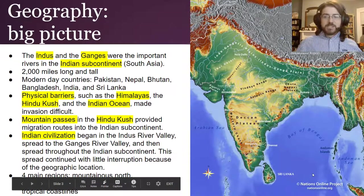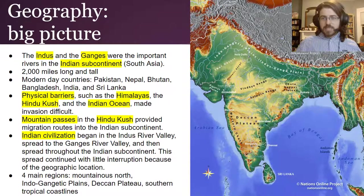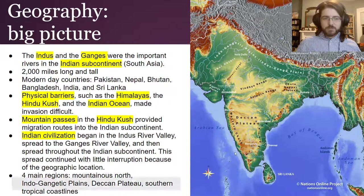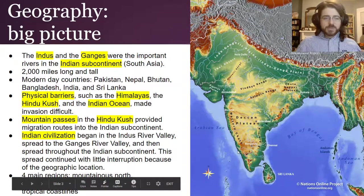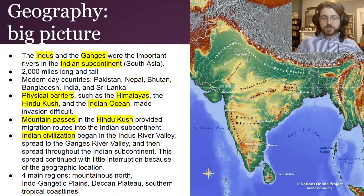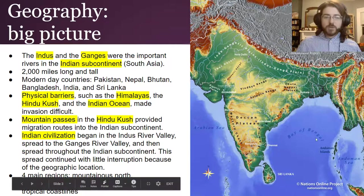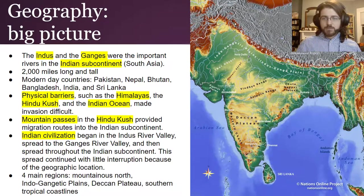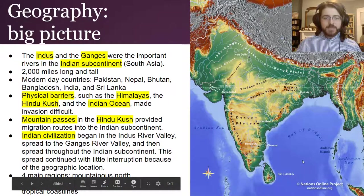Here's the biggest of big pictures: this is the Indian subcontinent. You have the Indus River here and the Ganges River here. Overall it's about 2,000 miles wide and 2,000 miles tall. It encompasses the modern-day countries of Pakistan, Nepal, Bhutan, Bangladesh, India, and Sri Lanka. It has these huge barriers all around it — the Himalayan Mountains and the Hindu Kush, as well as the Indian Ocean — which kept it relatively isolated and made invasion pretty difficult.